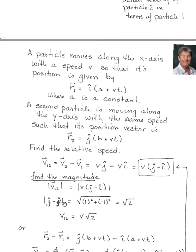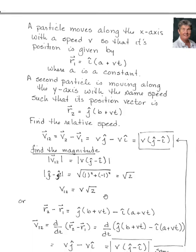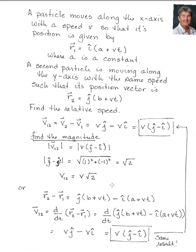We get this result and can find the magnitude. Working through that, we get the magnitude as v√2. Now, this is why we rethink and re-look at problems, because we can also do it by taking r2 - r1, plugging in that information, and taking the derivative with respect to time.